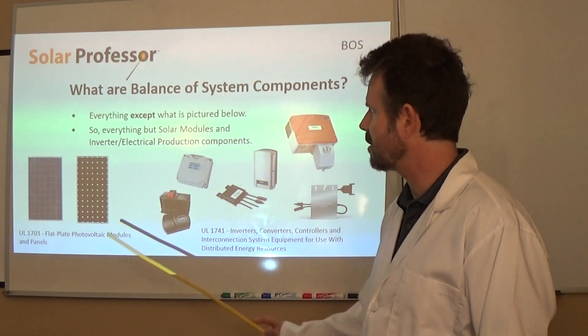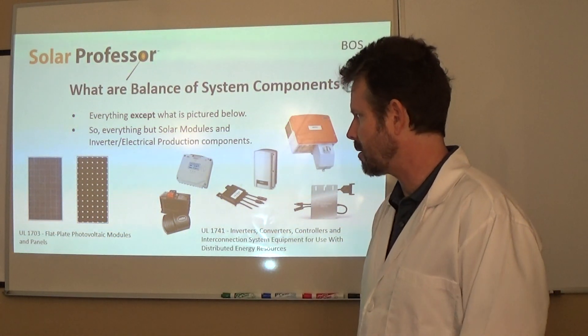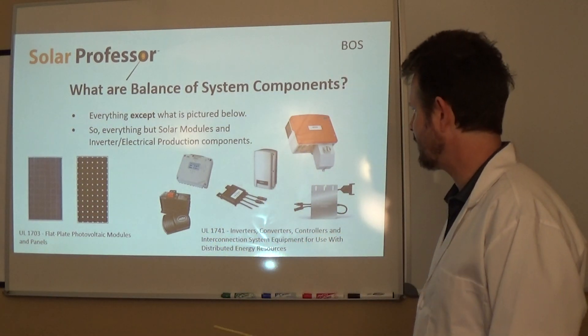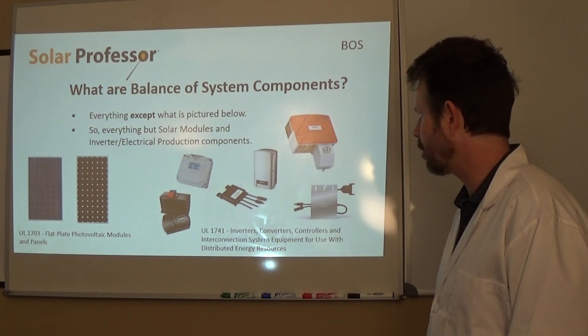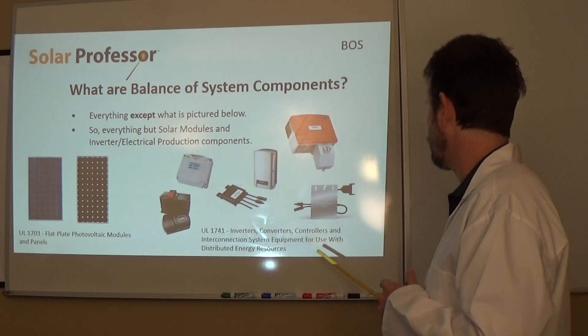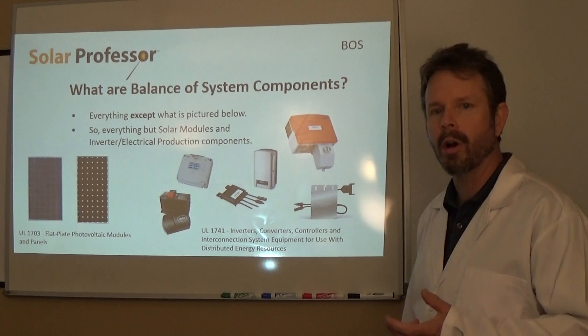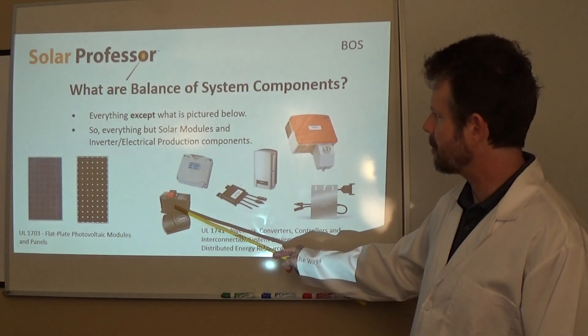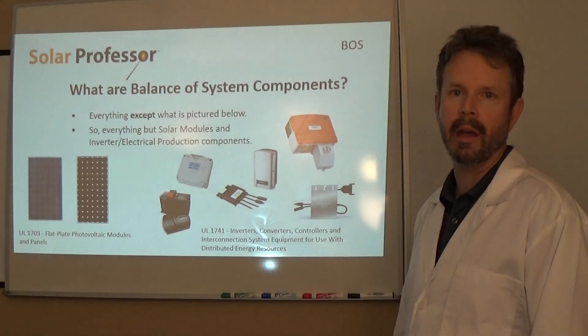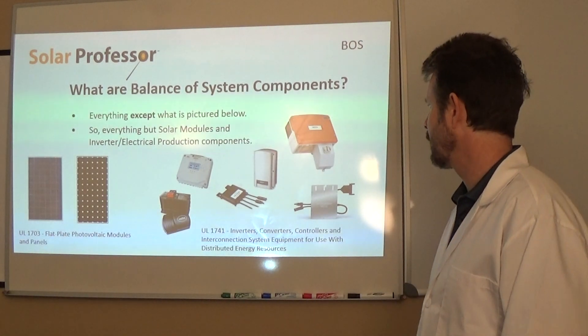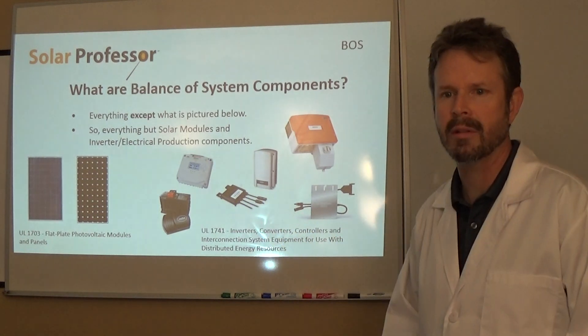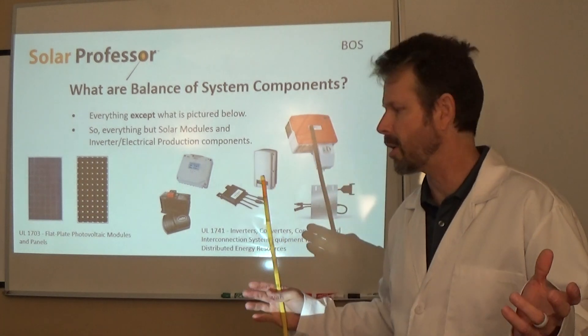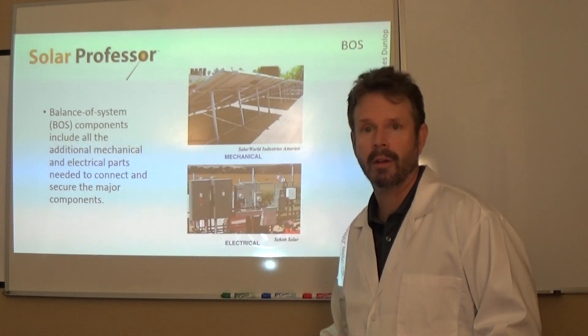UL 1703 listing of photovoltaic modules, flat plate collectors, the solar panels basically. The other UL section is 1741, and that covers inverters, converters, controllers, interconnection system equipment for use with distributed energy resources. In other words, it is your power producing components. So, I have a couple of inverters shown here, an inverter charger, a charge controller for an off-grid or battery-based type system, a micro-inverter and an optimizer there. These two categories right here is not what we are talking about in balance of system components. To be honest, it is everything else.